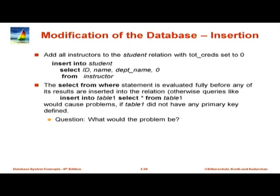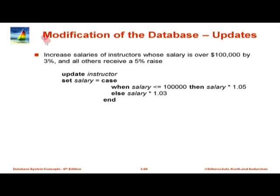Finally, UPDATE. Here is an example: UPDATE instructor SET salary = CASE WHEN salary < 100000 THEN salary * 1.05 ELSE salary * 1.03 END. This increases salary by 5% if below 100,000 and by 3% otherwise. The CASE expression returns a single value depending on the condition.